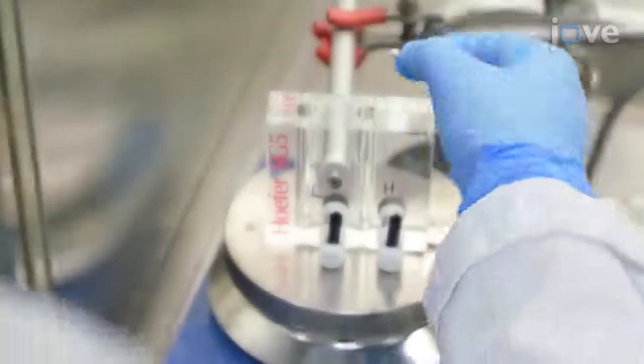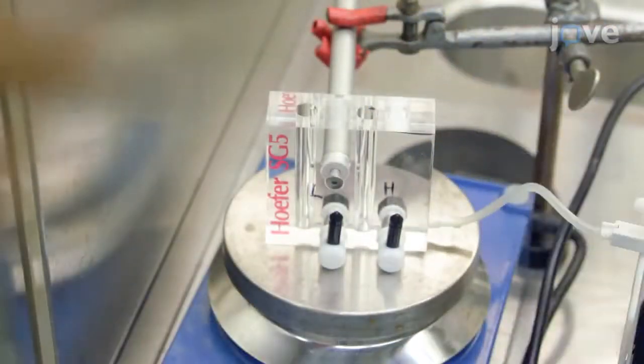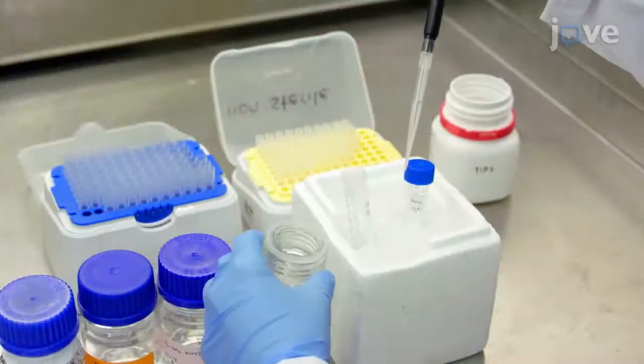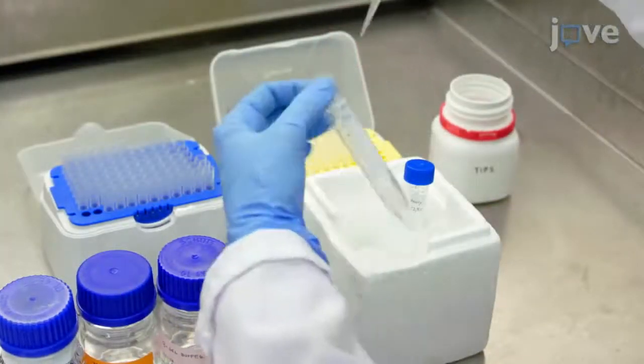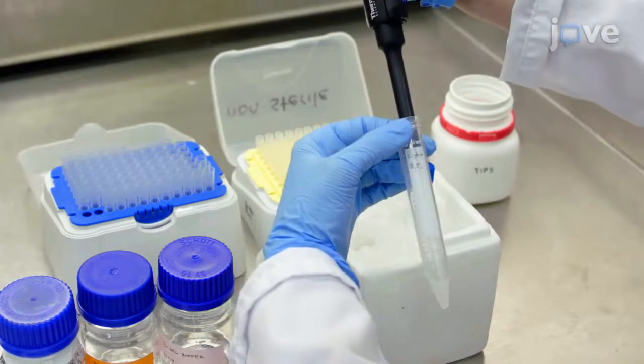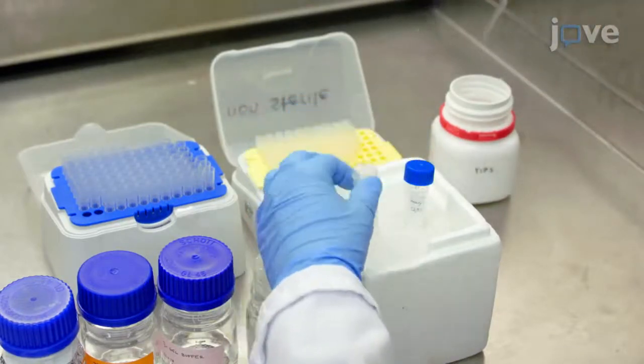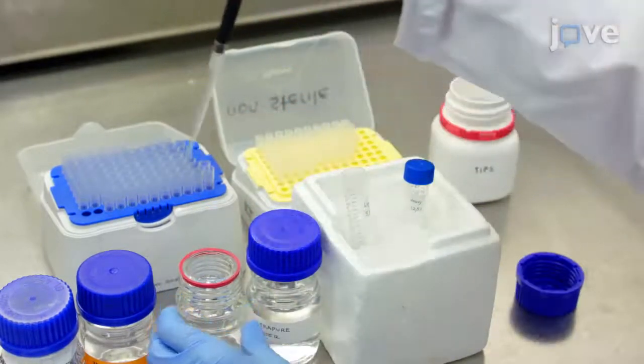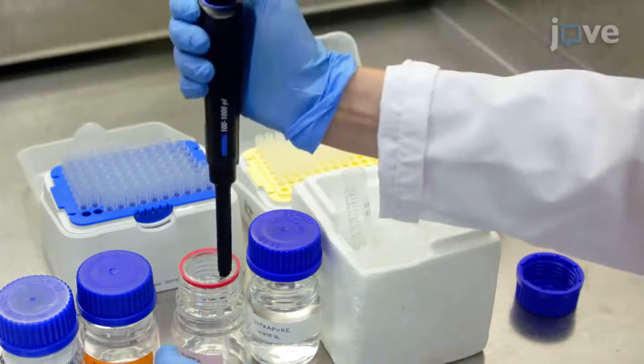Place a magnetic stirrer in the heavy chamber. Prepare 3.5% and 12.5% acrylamide solutions in 15 milliliter conical centrifuge tubes as detailed in the text protocol to use for the separation gel gradient.